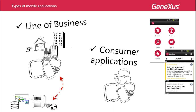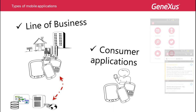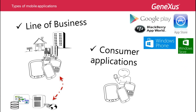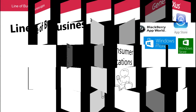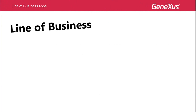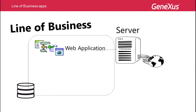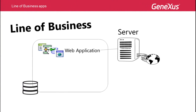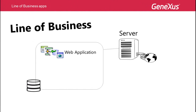In developing this type of applications for smart devices, the natural rollout or means of publication are the virtual stores of different platforms. However, in the case of corporate applications, because they are to be made available only to those who are part of the organization, they are not published in virtual stores to avoid all users from accessing them.